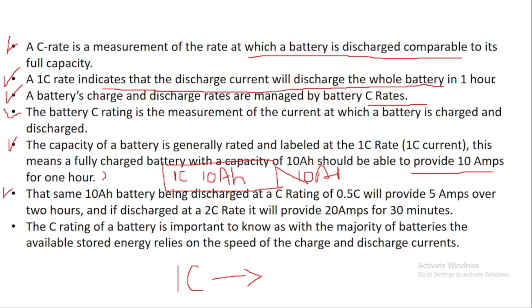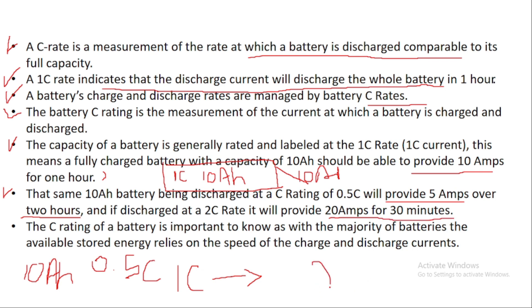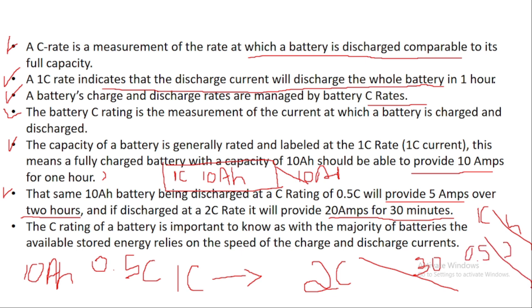That same 10Ah battery being discharged at a C-rate of 0.5 — suppose your rated capacity is 10Ah and C-rate is 0.5 — then your battery pack will provide 5A of current for two hours. And if it is discharged at 2C rate, it will provide 20A for 30 minutes. If your battery C-rate is 1C, it will take 1 hour to discharge completely, and if your battery pack C-rate is 0.5, then it will take 2 hours to discharge completely.